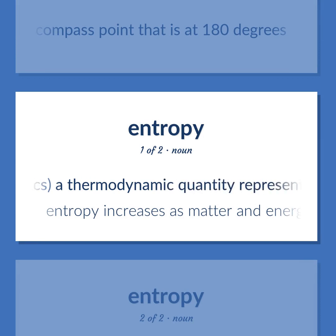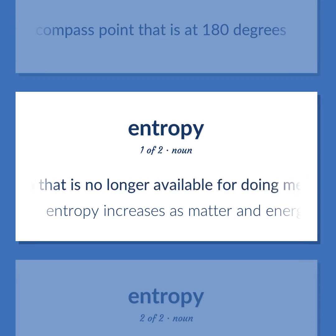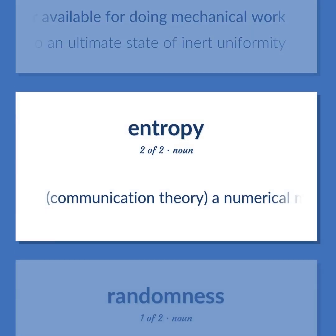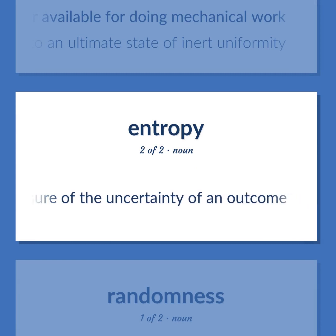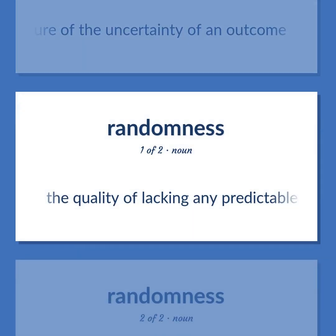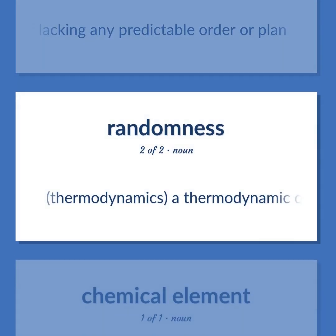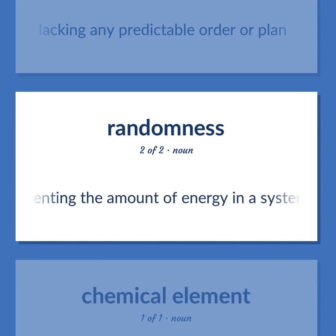Thermodynamics: a thermodynamic quantity representing the amount of energy in a system that is no longer available for doing mechanical work. Entropy increases as matter and energy in the universe degrade to an ultimate state of inert uniformity. Communication theory: a numerical measure of the uncertainty of an outcome. The quality of lacking any predictable order or plan.